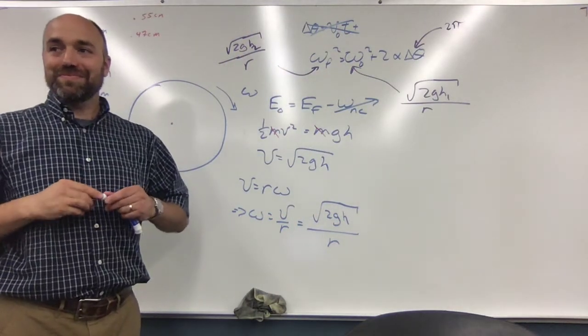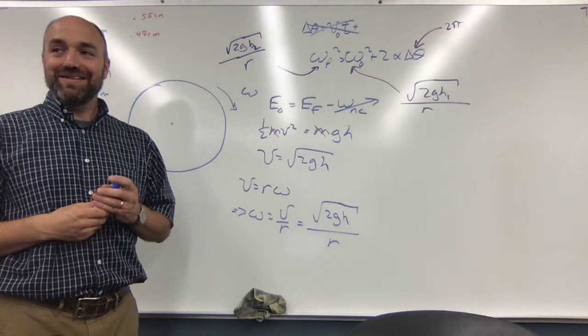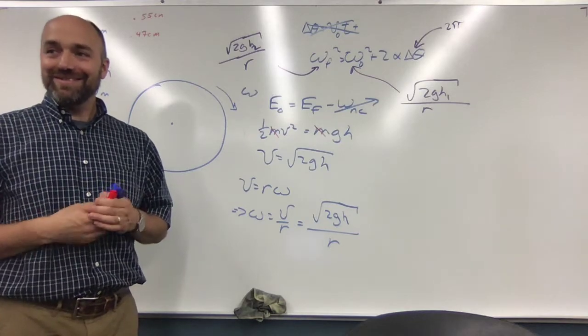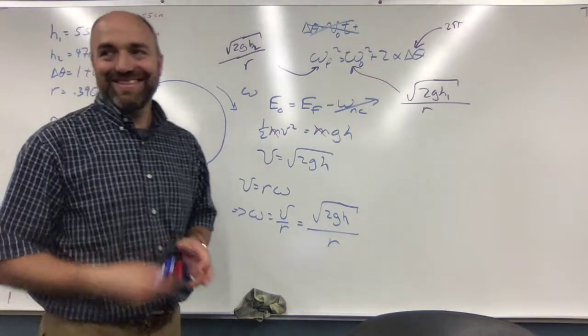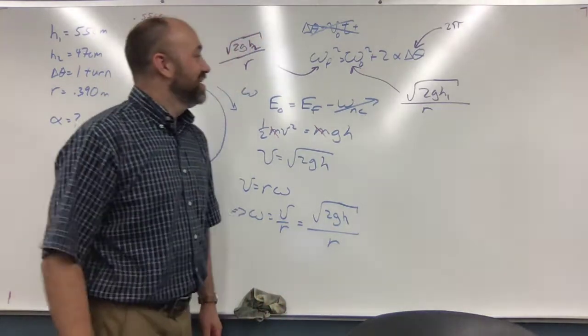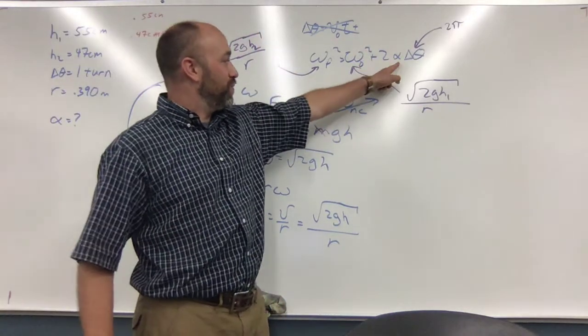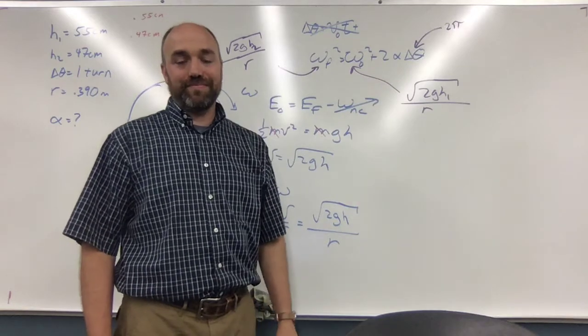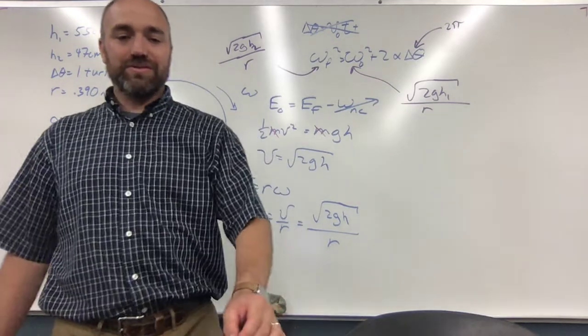Good. That was the bane of my existence in calculus, the unit circle. So now you know everything here and you can solve for alpha. Does that make sense?